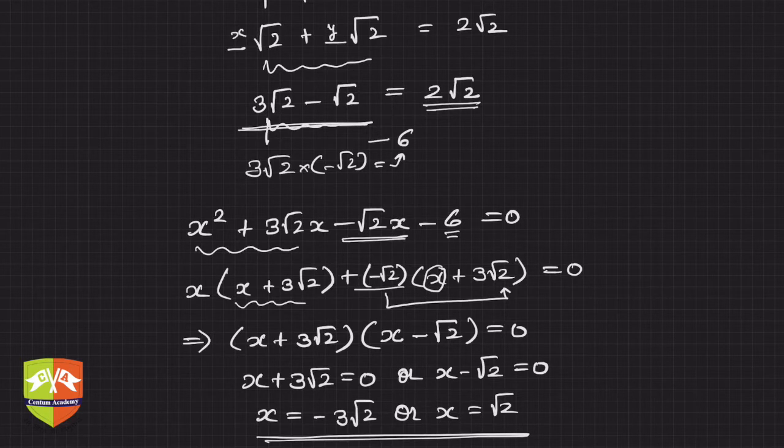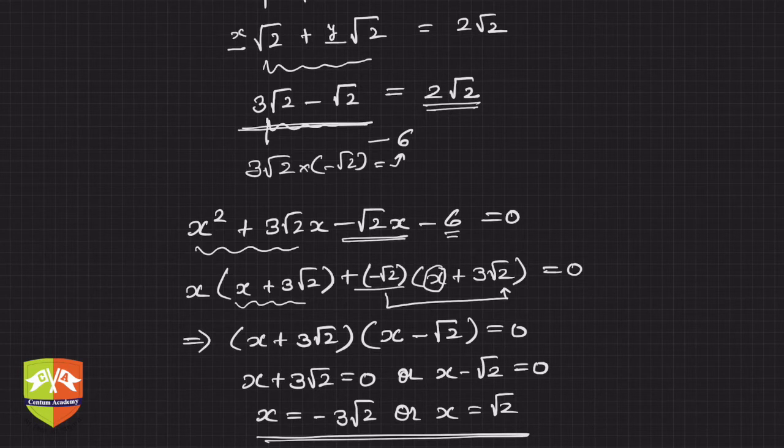So these are the two solutions. The best way is to deploy these values back, and you will get to know whether you have found the solution correctly or not. In this case, I know that the solutions are -3√2 and √2. Correct.